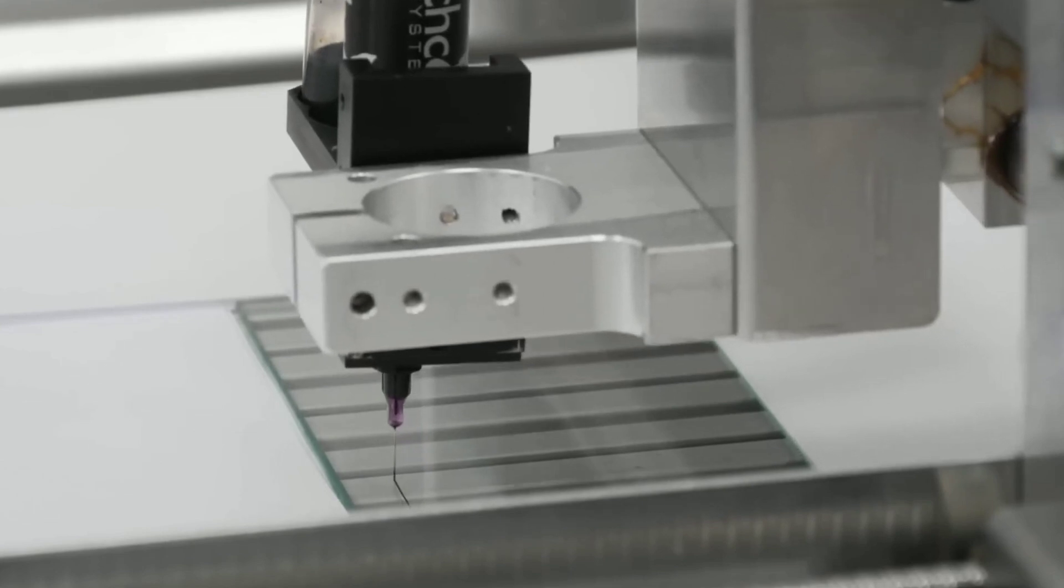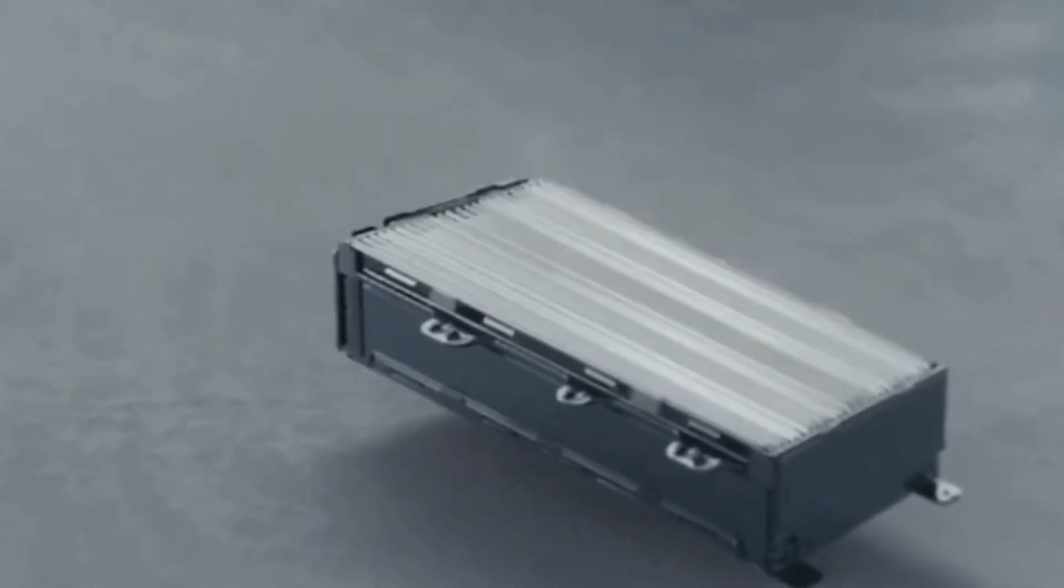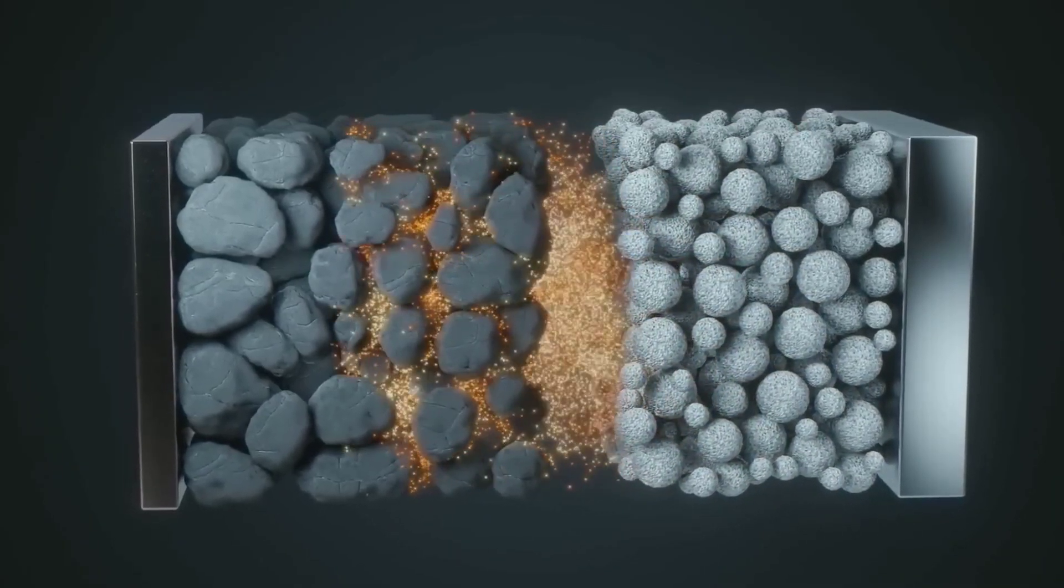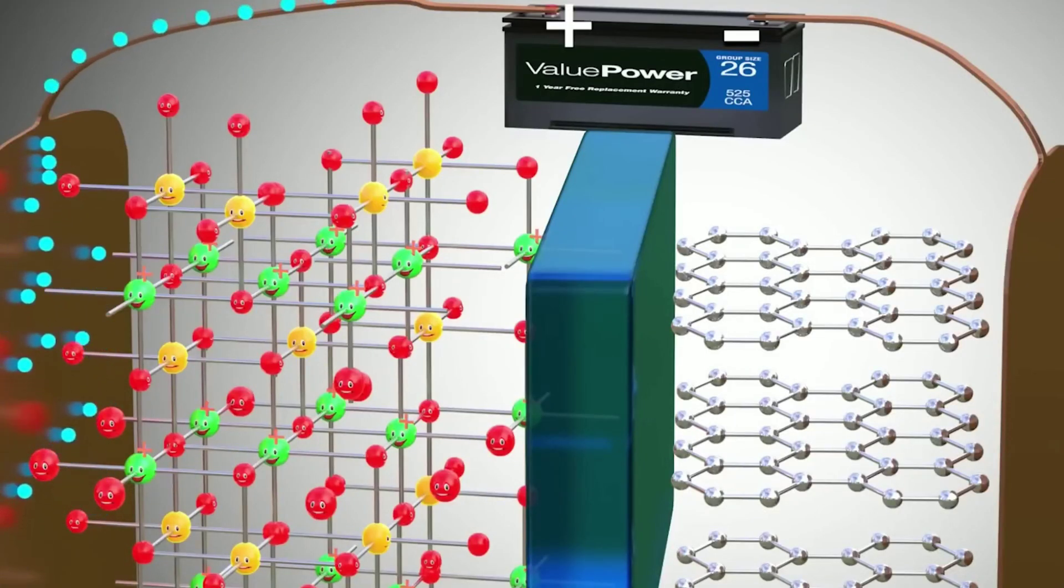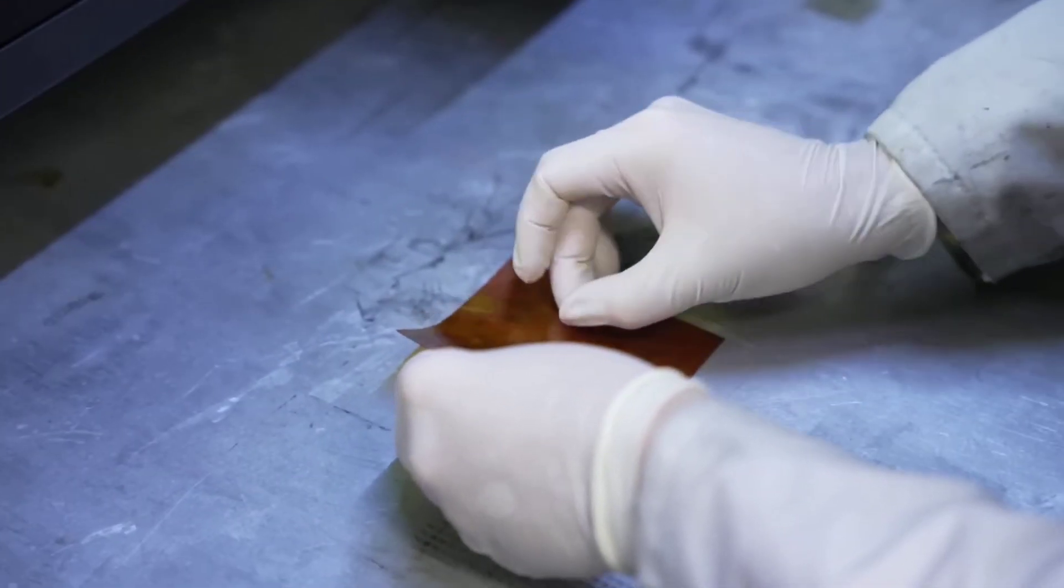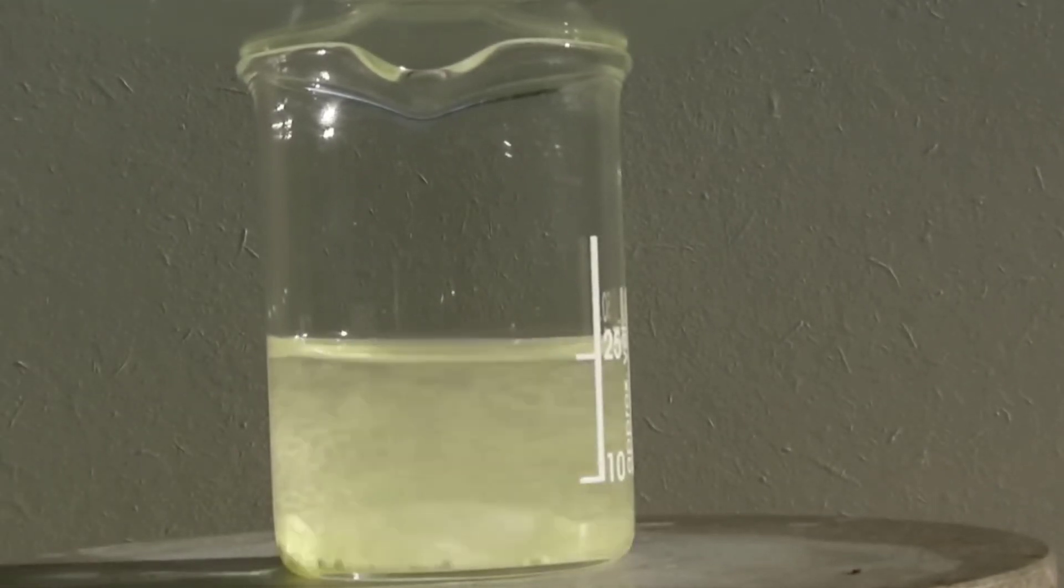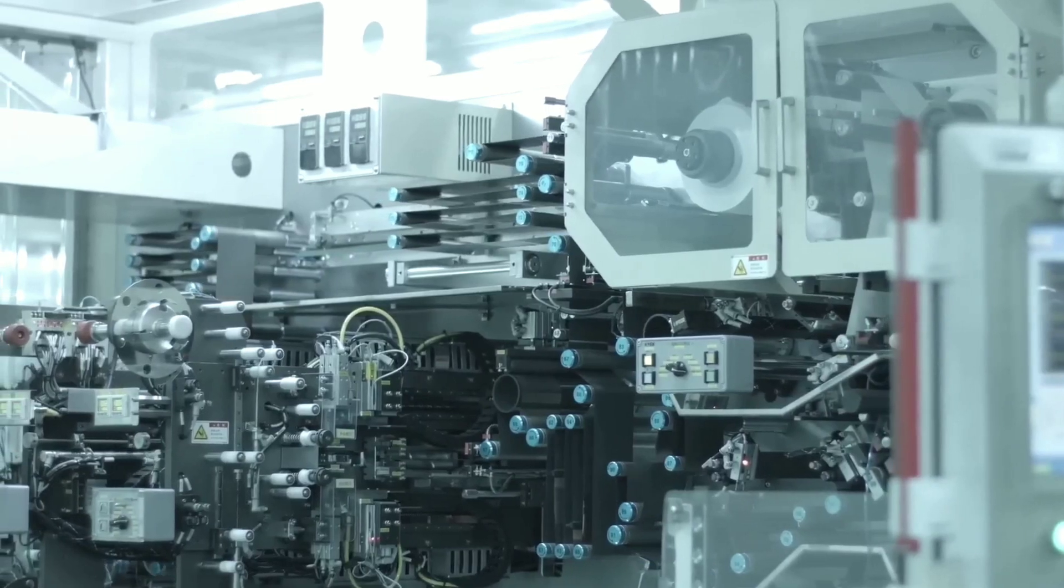Sounds too good to be true, right? Well, there is a catch. Lithium-sulfur batteries also have some major challenges that prevent them from being commercially viable. The main challenge is that both lithium metal and sulfur are very reactive materials that undergo complex chemical reactions during charge and discharge cycles. These reactions cause two major problems, dendrite formation and polysulfide shuttle.